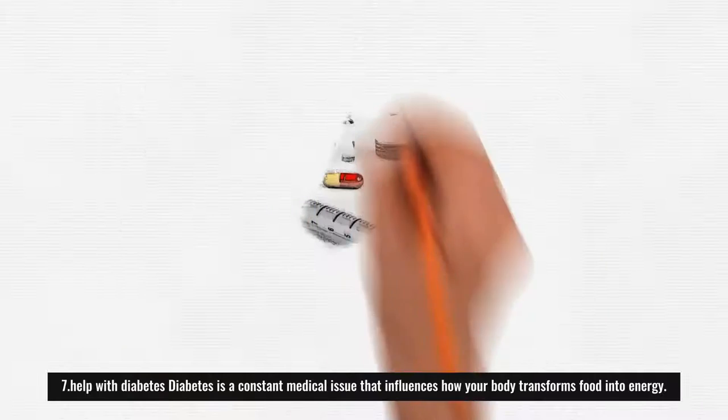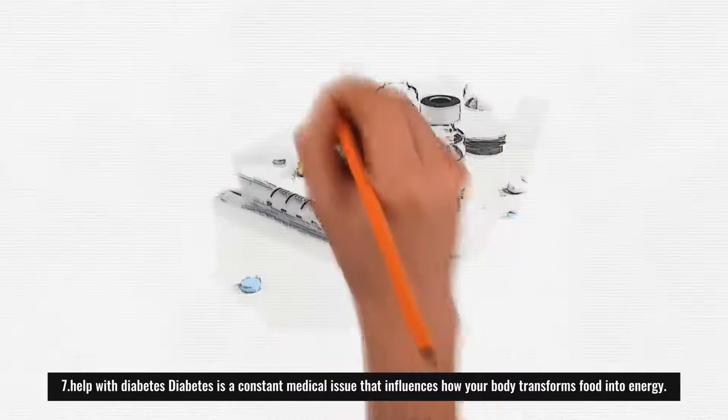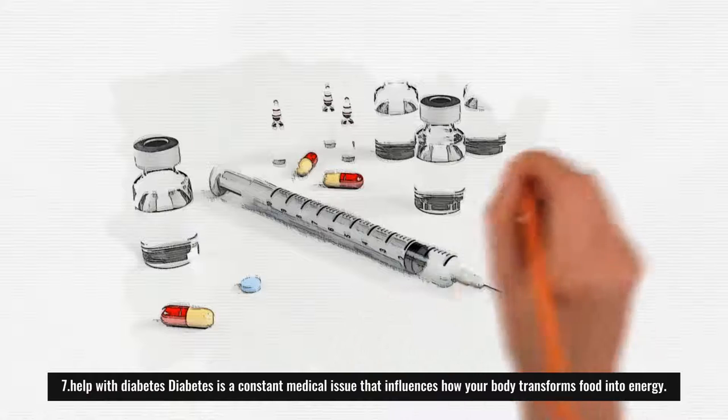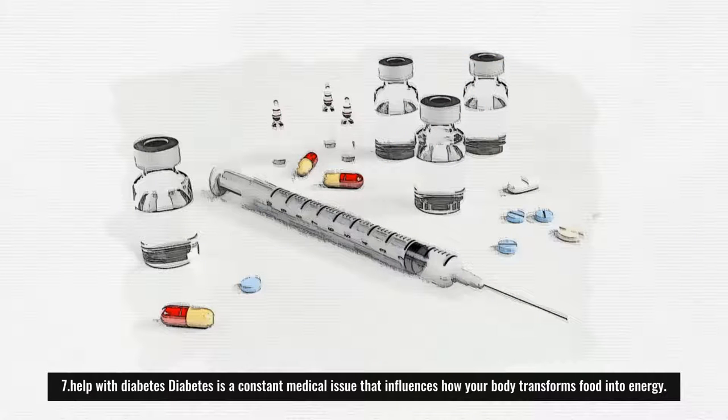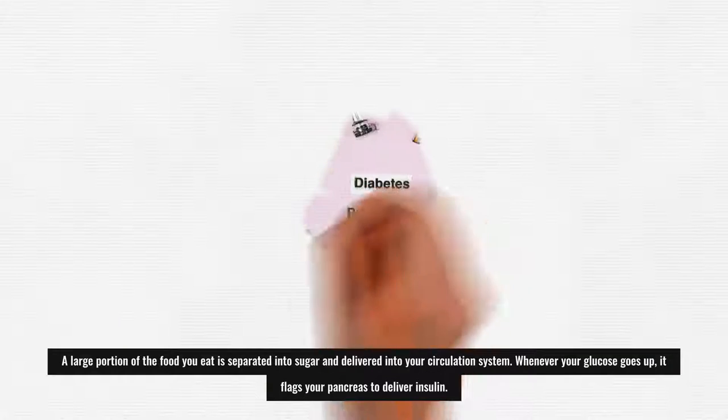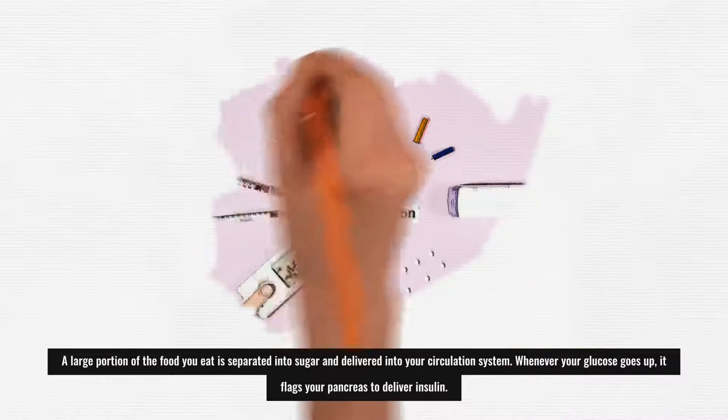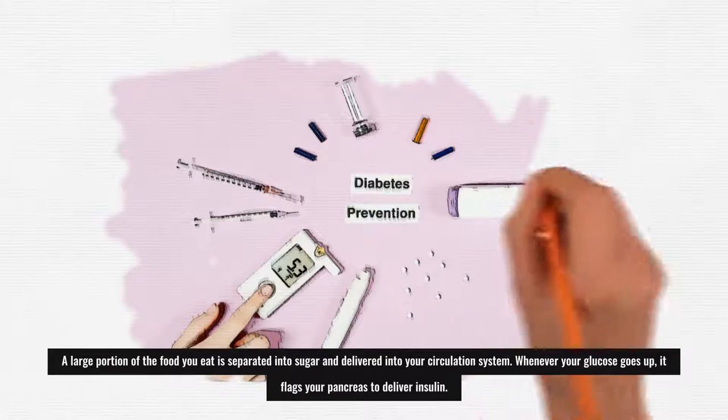7. Help with Diabetes: Diabetes is a constant medical issue that influences how your body transforms food into energy. A large portion of the food you eat is separated into sugar and delivered into your circulation system.